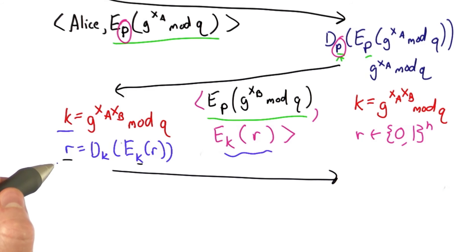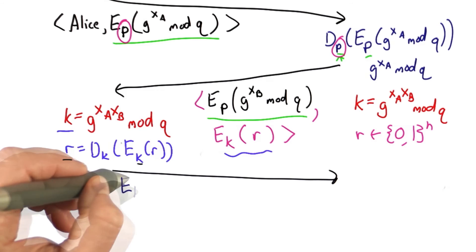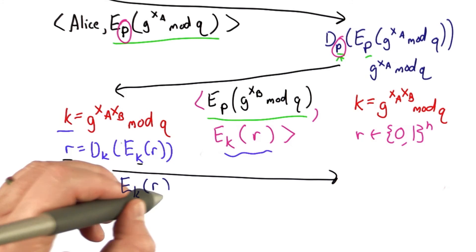So Alice could do this by proving that she learned R, so she could send the message, encrypting with the key, R back to the server.